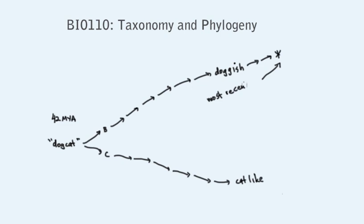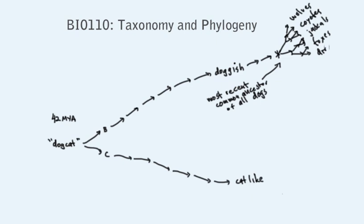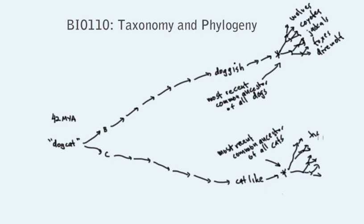One of the animals along this lineage became the most recent common ancestor to all dogs. Tigers, lions, jaguars, ocelots, pumas, cheetahs, and so on.